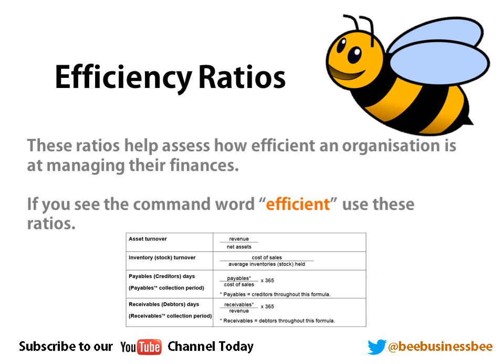Another type of ratio you may use is called a financial efficiency ratio. These quite clearly measure how efficient an organisation is at managing their finances. The typical command word is 'efficient' or 'effective.' There are four ratios you should use for this: inventory or stock turnover, payables or creditors days, receivables days, and asset turnover ratio.